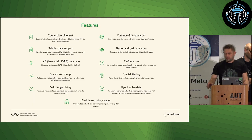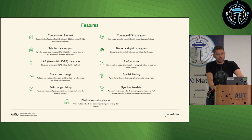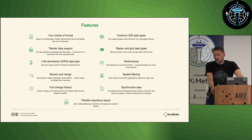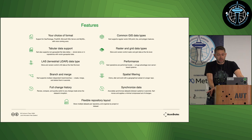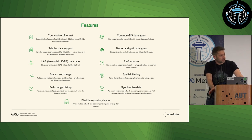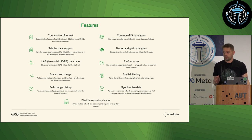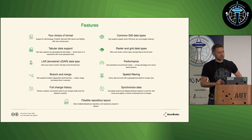We weren't going to do a demo today but we'll talk about what CART supports right now. CART is like Git for data — spatial data specifically. You can use your choice of format and common GIS data types. We also support tabular data, so despite the focus on spatial data you can version control non-spatial data as well. We'll talk specifically about the new features: raster and grid data, and point cloud or LAS data that we've just added. It also supports good performance, branching and merging, spatial filtering — a major feature over just putting data in Git — and easy synchronization with multiple datasets in a repository.